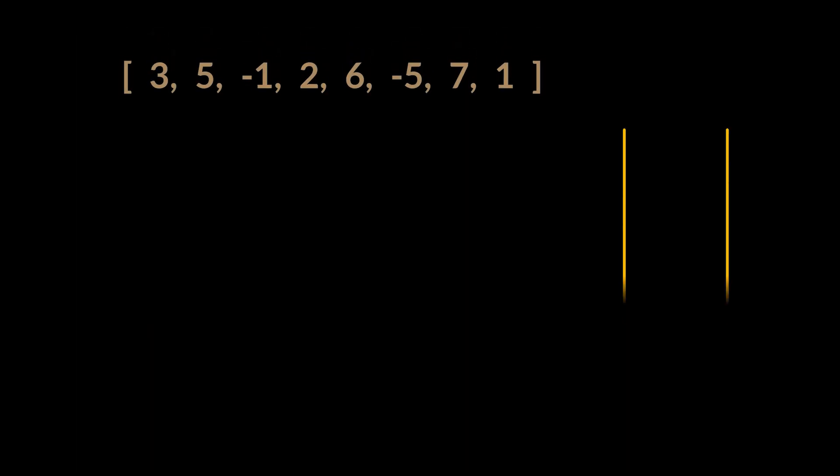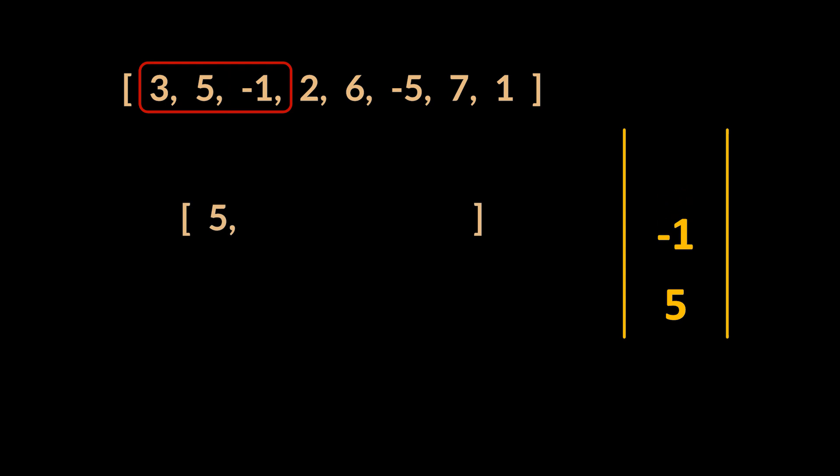To visualize this solution, let's run this implementation on the example we had. The first element is added to the queue. When we attempt to add the second one, the inner while loop will remove number 3 from the queue, since our current integer 5 is bigger than 3. Then, minus 1 is added, and 5 is said to be the result of the window at index 0.